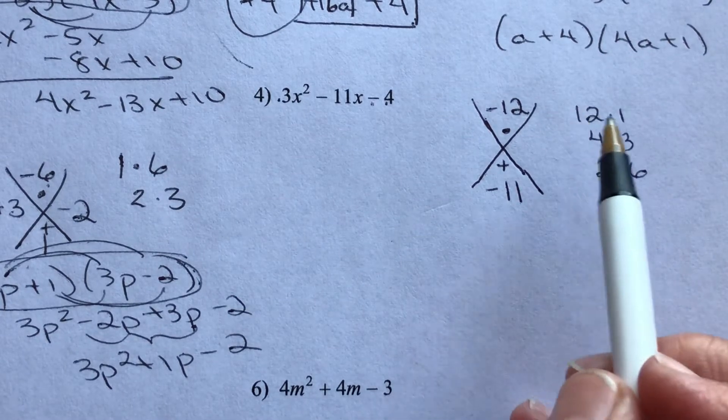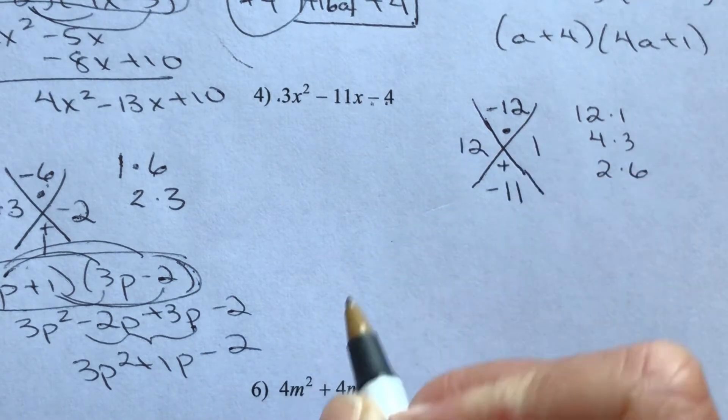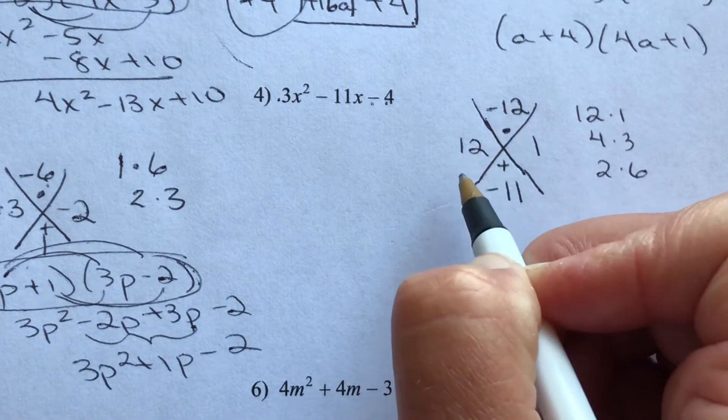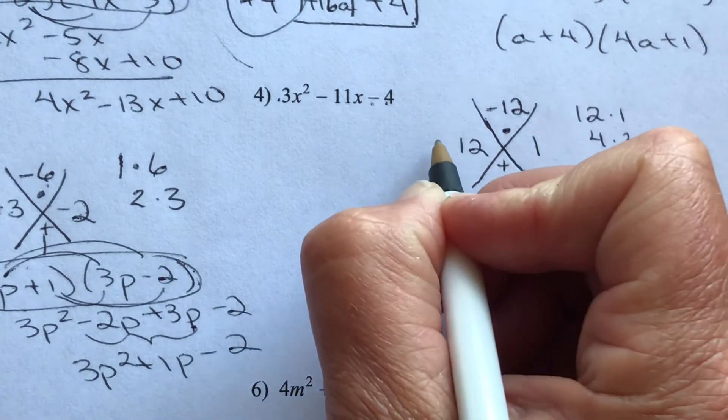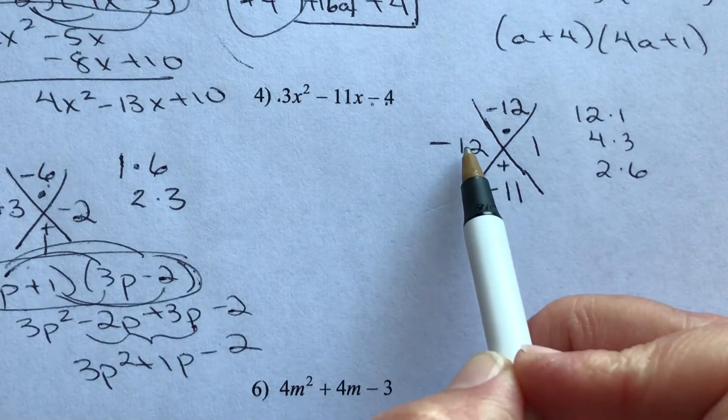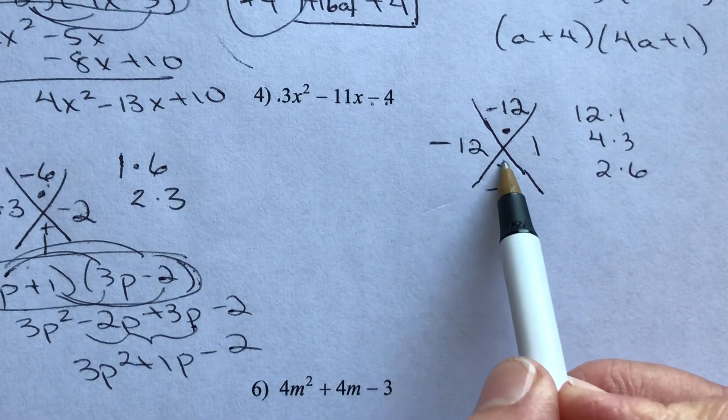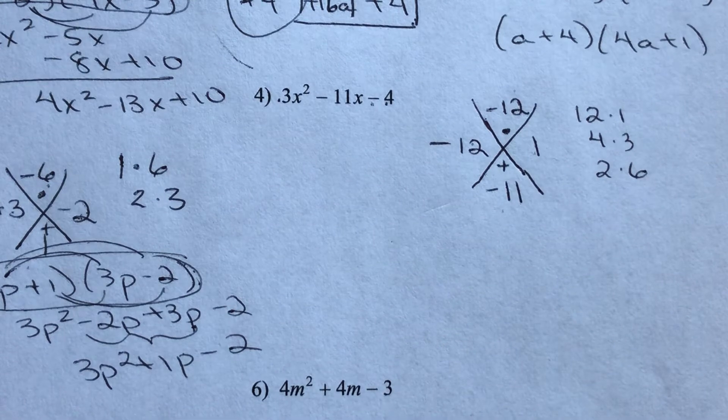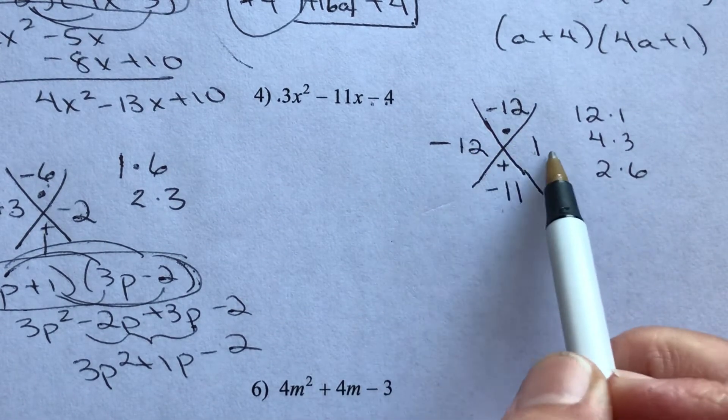Subtracting right here, it would be these two. So this is going to be 12 and 1, but one of these has got to be negative. It's going to be the negative 12, and here's why. Negative 12 times 1 is negative 12. Negative 12 added to positive 1 gives me the negative 11. So my two factors are negative 12 and 1.